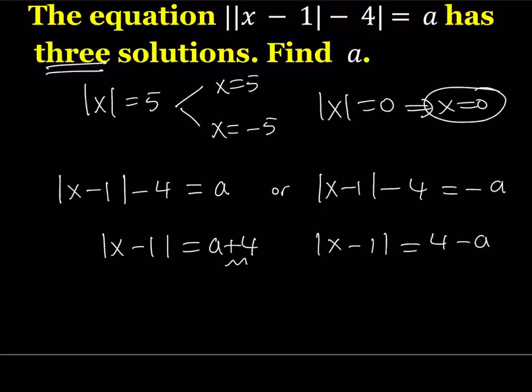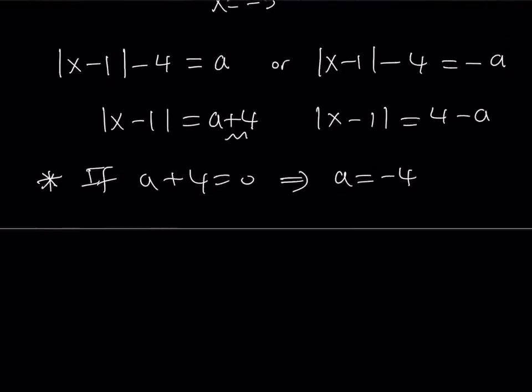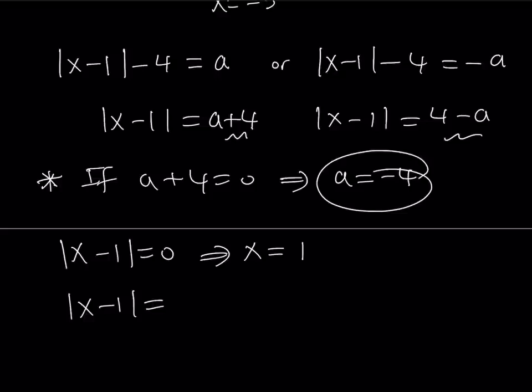Suppose this is equal to zero. We're going to look at it case by case. First case, if a plus 4 is equal to zero, then we get one solution from there. This means that a is equal to negative 4. So if a equals negative 4, then I get x minus 1 equals zero, or the absolute value of x minus 1 equals zero. But this only gives me x equals 1. So that's one solution. The other one gives me the absolute value of x minus 1 equals 4 minus a. But if a is equal to negative 4, substitute and you're going to get 4 minus negative 4, which is 8. Now, this gives you two solutions. You can say that x minus 1 is either 8 or negative 8, because there are two numbers whose absolute value equals 8. From here you get x equals 9, and from here you get x equals negative 7.